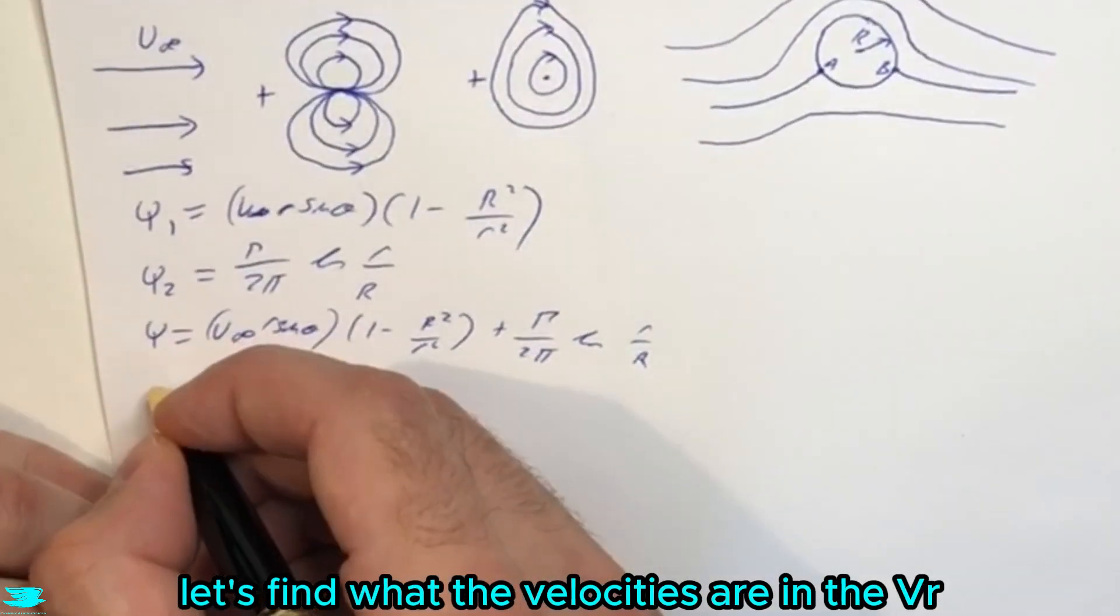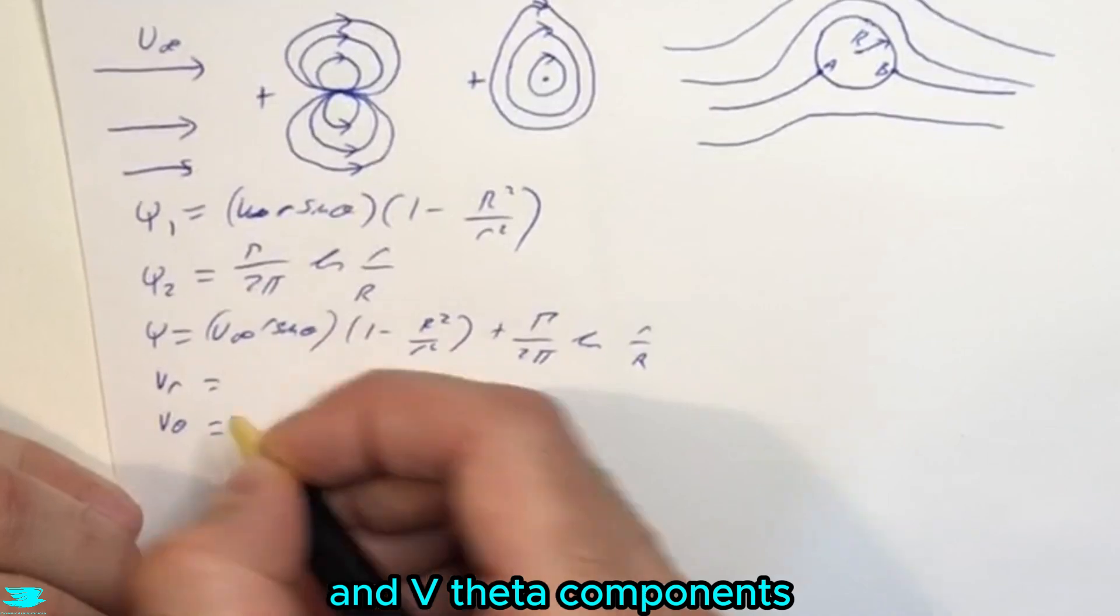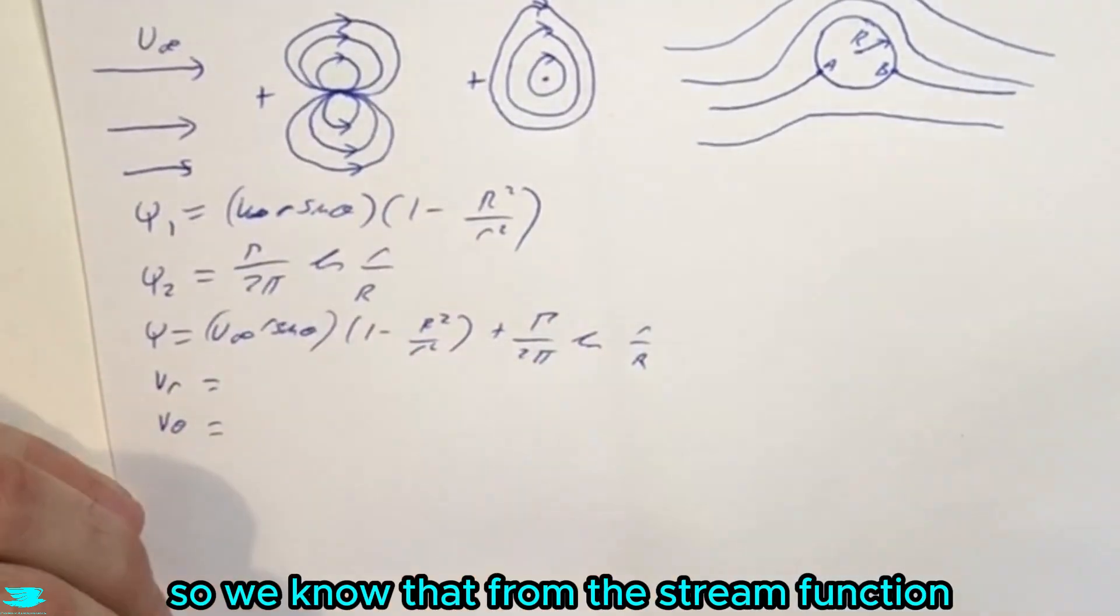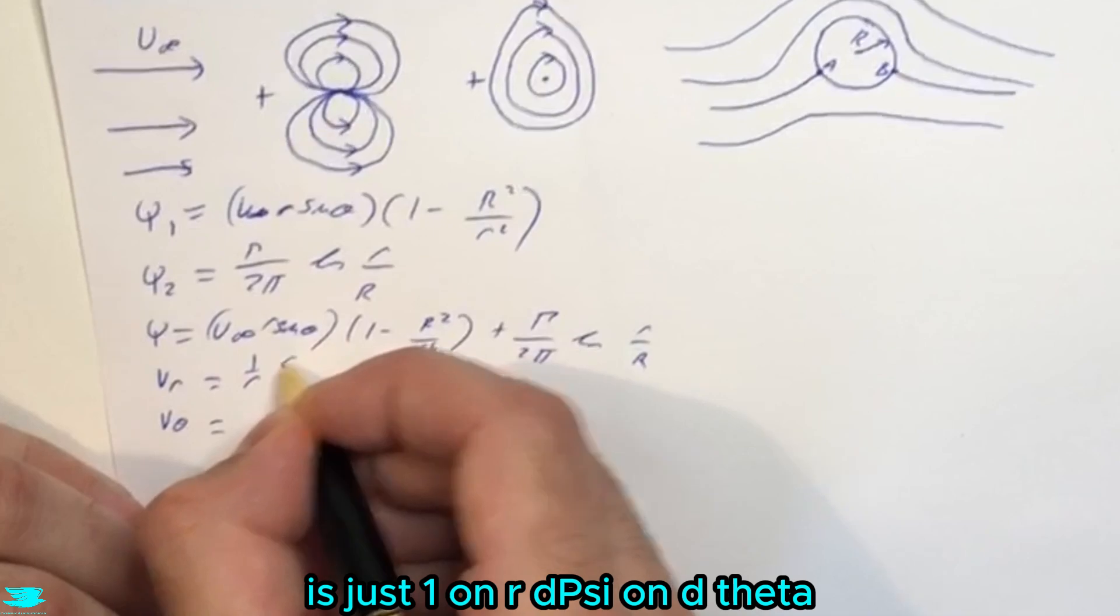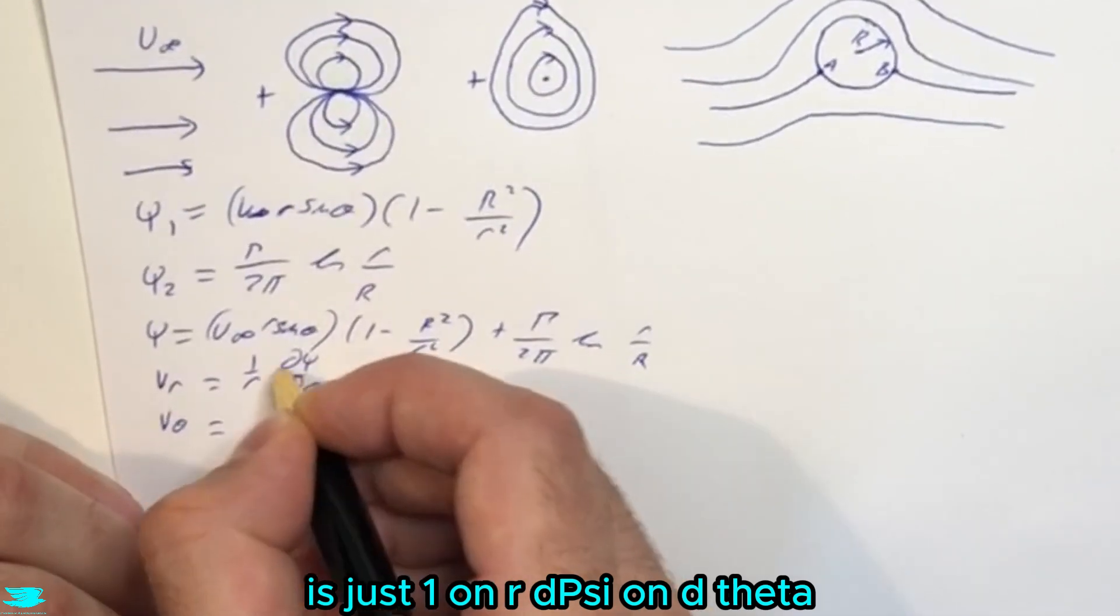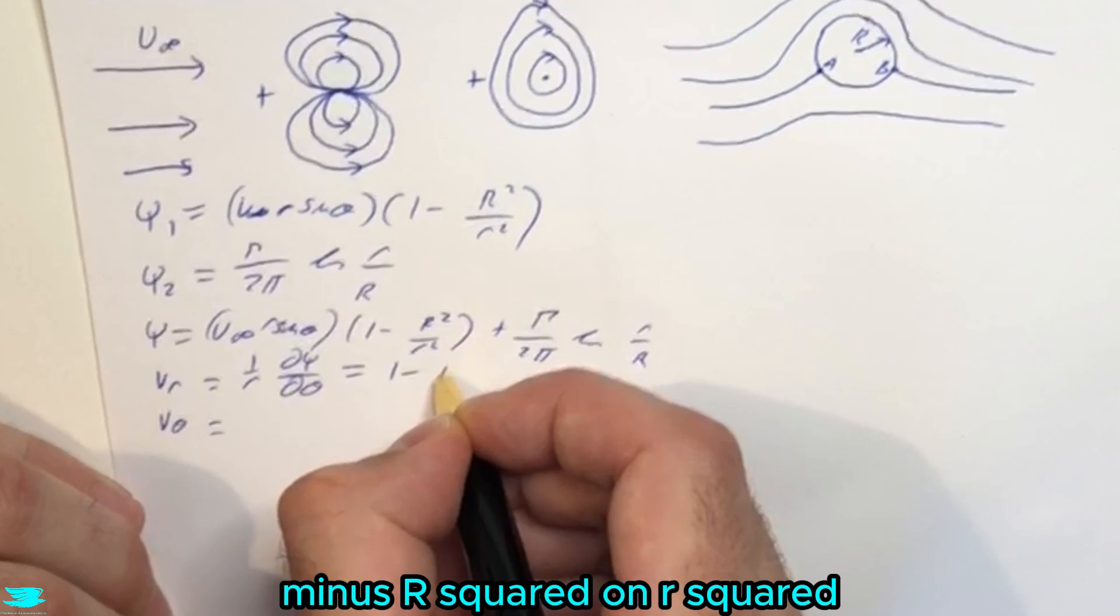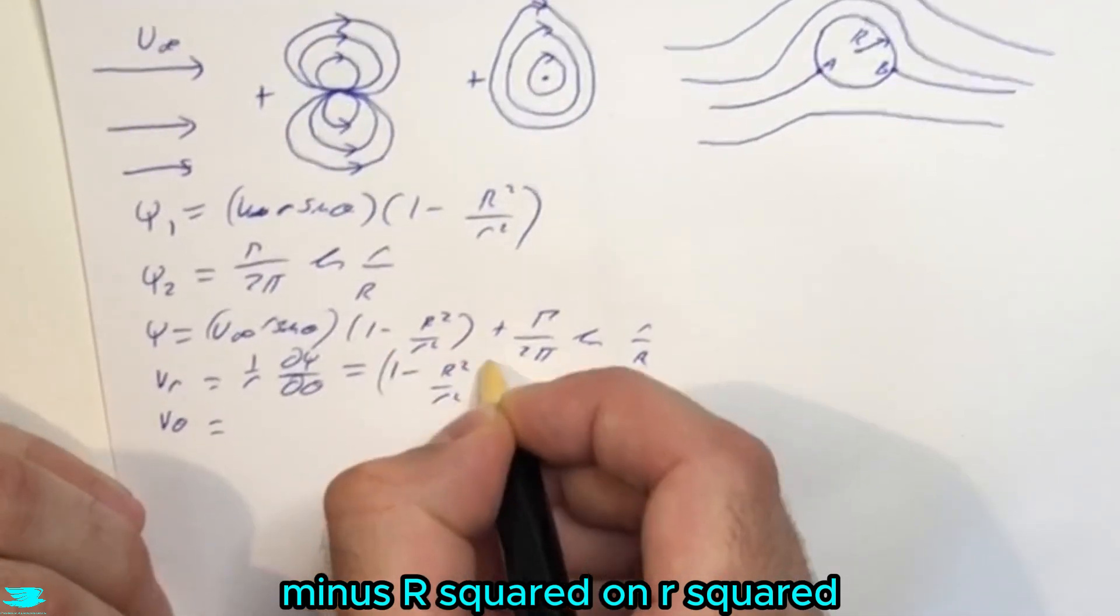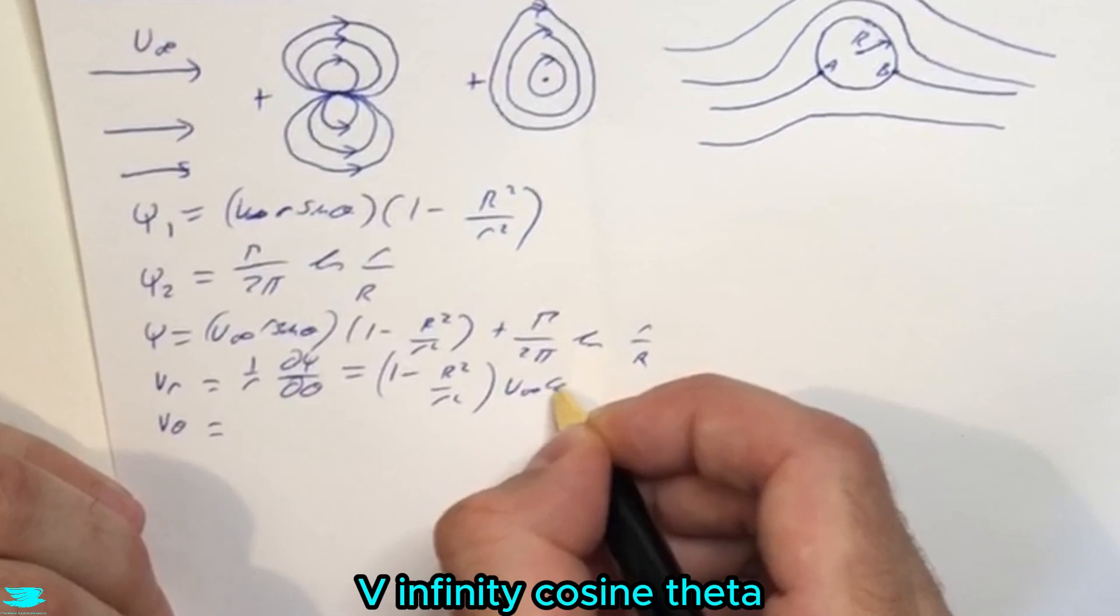So that is the stream function for this flow here. Let's find what the velocities are in the Vr and Vtheta components. So we know that from the stream function, to find Vr from the stream function is just 1 on R, dPsi on dTheta, so partial derivatives.